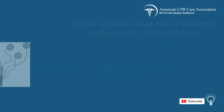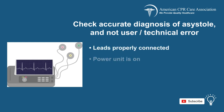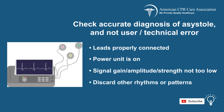When confronting asystole, the first step is to ensure that you're dealing with an actual asystole rather than a user or technical error by making sure of a few things. Be sure that the leads are properly connected. Check that the power unit is on. Make sure that the signal gain, amplitude, or strength is not turned down or too low. Be sure that the rhythm doesn't look like another pattern.